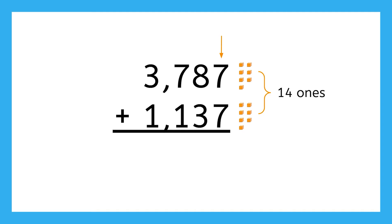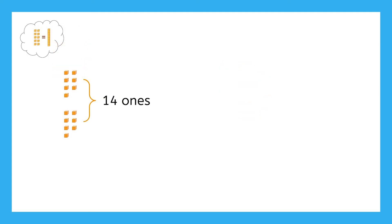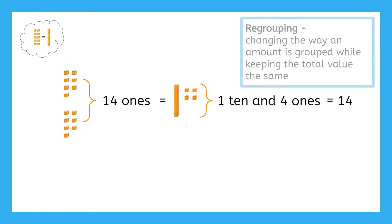It's a two-digit number. So, in order to record our answer, it needs to be one digit. We can do this by remembering that ten ones is the same as one ten. Fourteen ones can also be grouped into one ten and four ones. Even though they're shown different ways, they both represent the same value, fourteen. This is known as regrouping, where we're changing the way an amount is grouped, while keeping the total value the same.